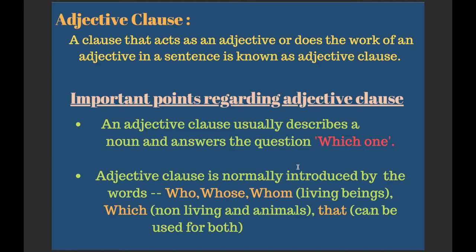Before I take up the examples, let me present some important points to keep in mind regarding adjective clauses. The very first point: an adjective clause usually describes a noun and answers the question 'which one.' When we frame a question using the word 'which' along with the noun, we get the adjective clause as the answer. When I take up the examples, I'll show you how to frame the question and get the answer.